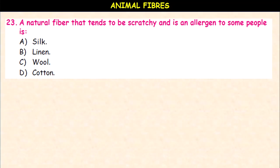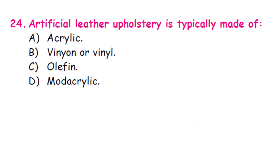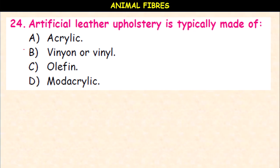A natural fiber that tends to be scratchy and is an allergen to some people is silk, linen, wool, or cotton? It is linen. Artificial leather upholstery is typically made of acrylene, vinyon or vinyl, olefin, or monocrylics? It is vinyl.